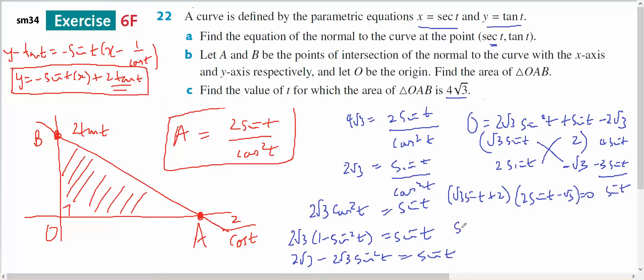Which means sine of T equals minus 2 on root 3. Since root 3 is 1.7, that answer is bigger than or smaller than negative 1.